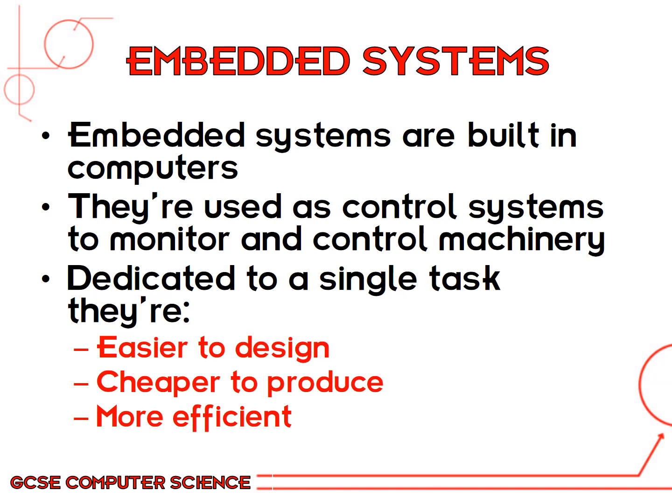An embedded system is a computer system which is built into a device. They're used as control systems to monitor and control machinery. The best examples would be a dishwasher, a microwave and a TV. They're all built into the device and they only really control what is in the device — they can't take in extra data and process it. The most important thing about embedded systems is that they're usually dedicated to one particular task, which makes them easier to design, cheaper to produce and more efficient.